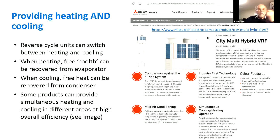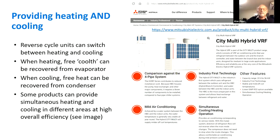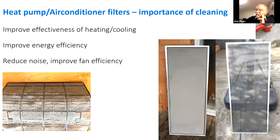Heat pumps can also do lots of things in terms of simultaneous heating and cooling. A reverse cycle air conditioner can switch between heating and cooling by running backwards. If you're running a heat pump for heat, there's essentially free cooling coming off the other side. Conversely, a chiller producing cooling also produces heat that can potentially be used. Some newer products can actually provide heat in some parts of a building and cooling simultaneously in other parts, giving really useful overall efficiency improvements.